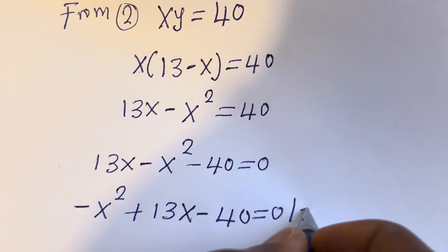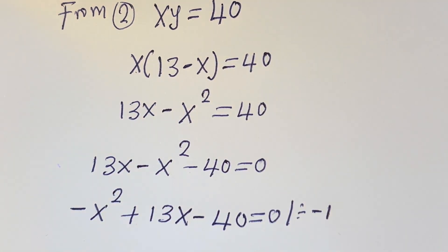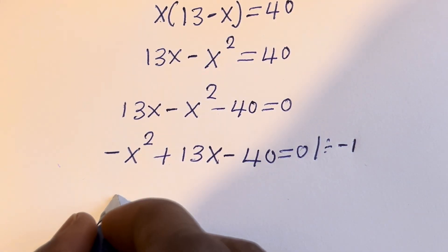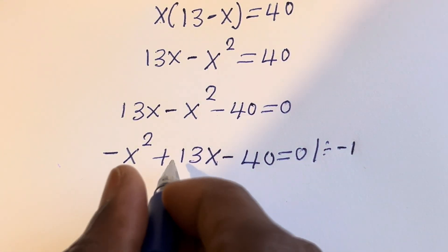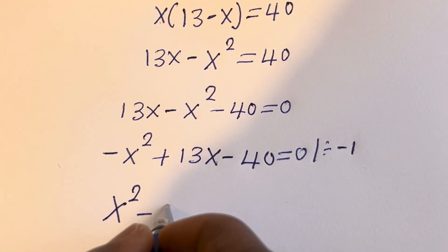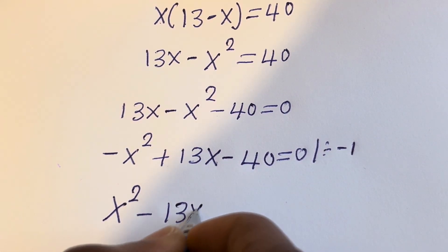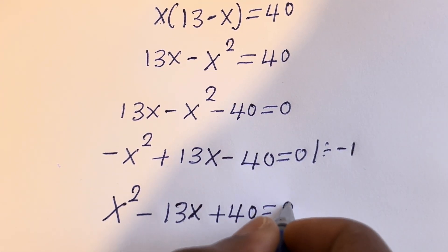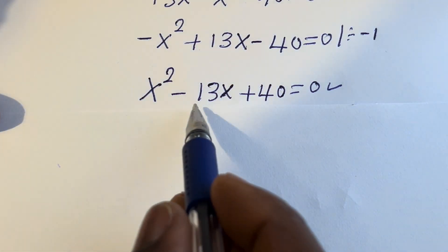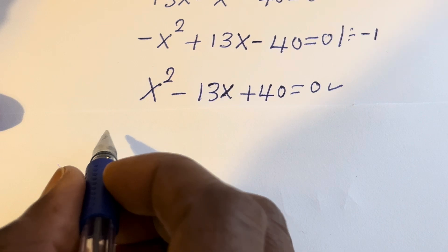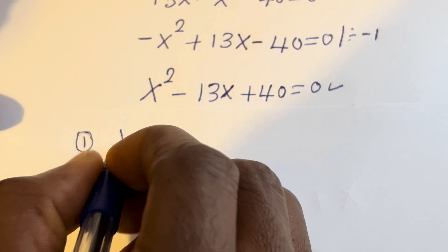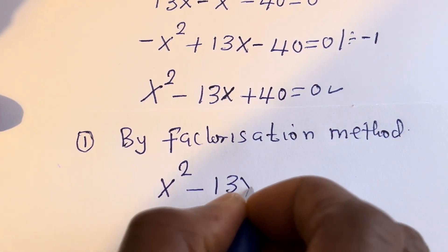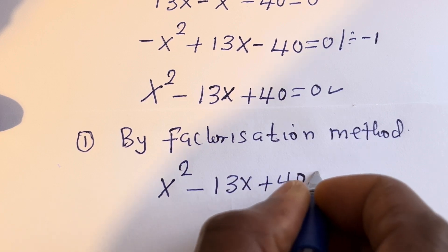Now let's divide through by minus 1. Minus S squared divided by minus 1 is S squared; plus 13S divided by minus 1 is minus 13S; and minus 40 divided by minus 1 is plus 40, equal to 0. This is a quadratic equation. We can solve this using either the factorization method or the quadratic general formula. Let's use the factorization method. We have S squared minus 13S plus 40 is equal to 0.